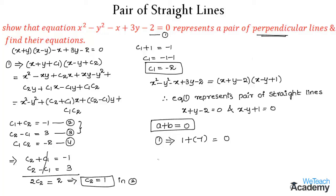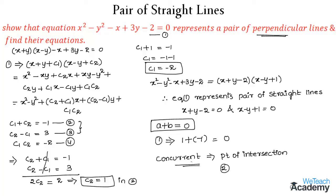Similarly, if we need to prove whether the lines are concurrent, we first find the point of intersection of the lines represented by equation 1 using the formula we already discussed, and then substitute that point of intersection in equation 2. Hope you understood the concept. For more videos visit our website. Thanks for watching, have a nice day.